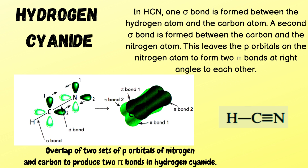The next example is hydrogen cyanide (HCN). One sigma bond is formed between the hydrogen atom and the carbon atom. A second sigma bond is formed between carbon and nitrogen. The remaining p orbitals on the nitrogen atom form two pi bonds at right angles to each other, giving a triple bond between carbon and nitrogen.